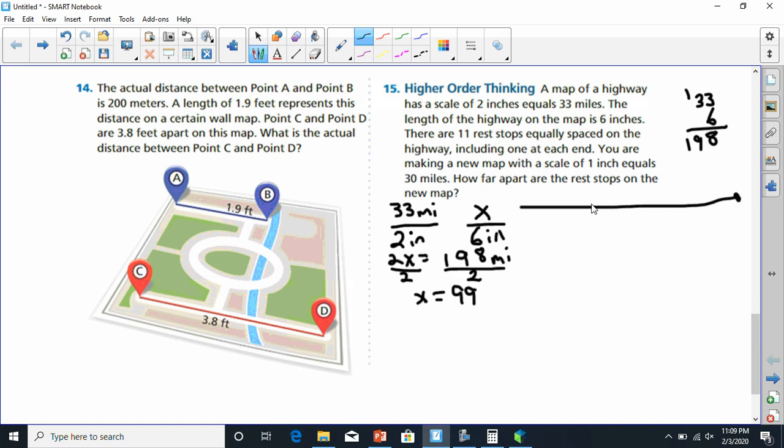Well, if I make this rest stop here, and I was to make 11 stops. There's 1, 2 right there. This would be 3, 4, 5, 6, 7, 8, 9, 10, 11.